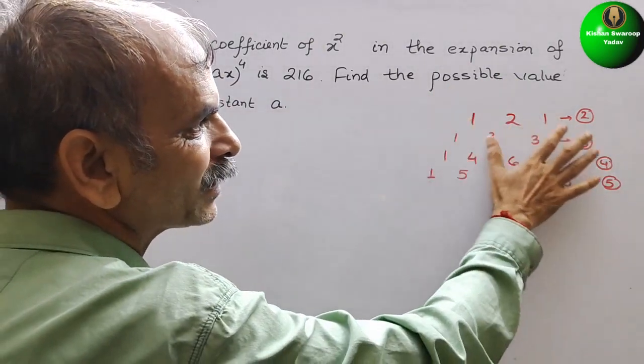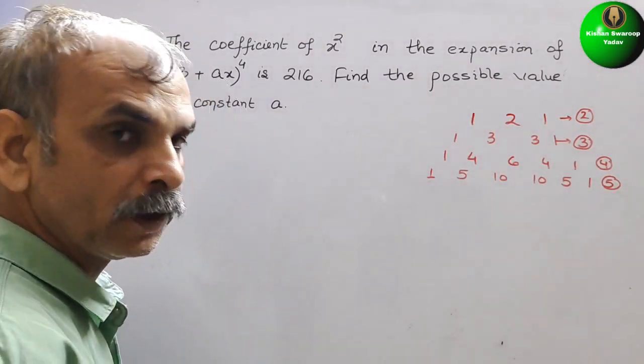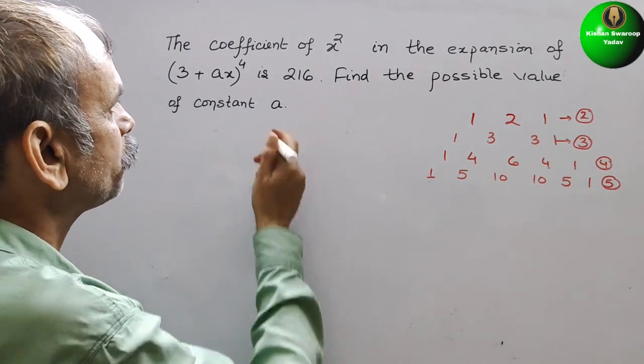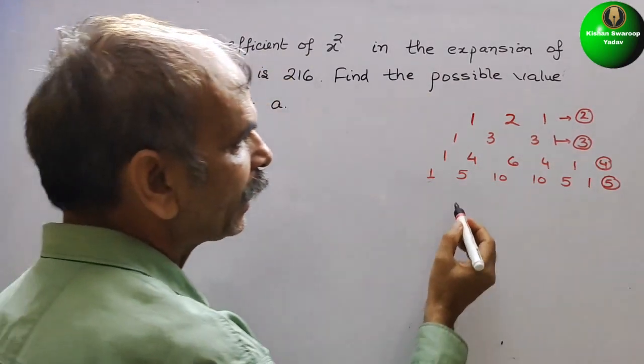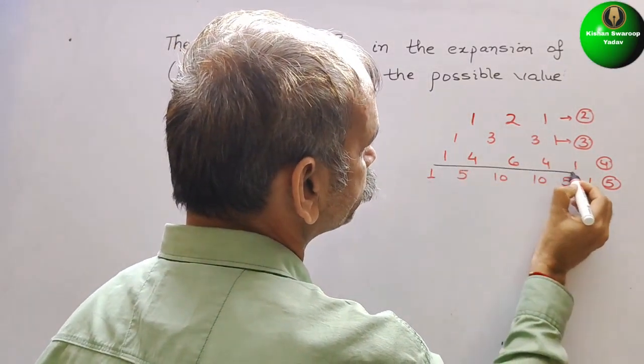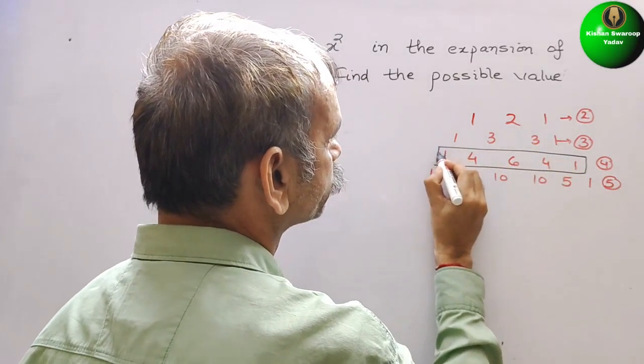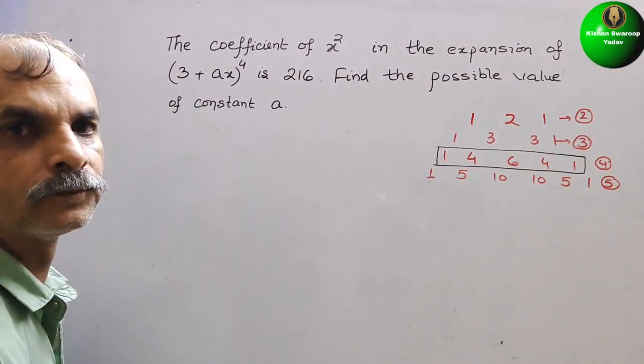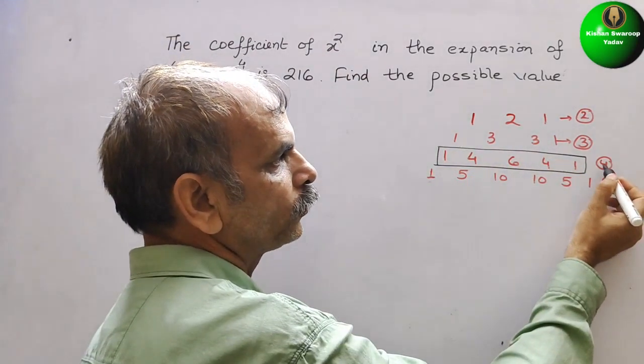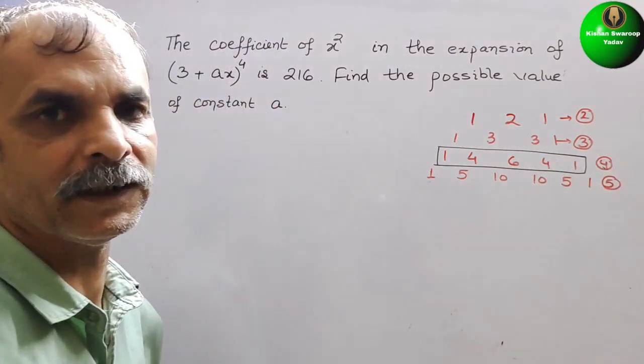So this is your Pascal's triangle. Here, they have given the maximum power as 4. So that is this. And the power is 4. Here the power I have written here.